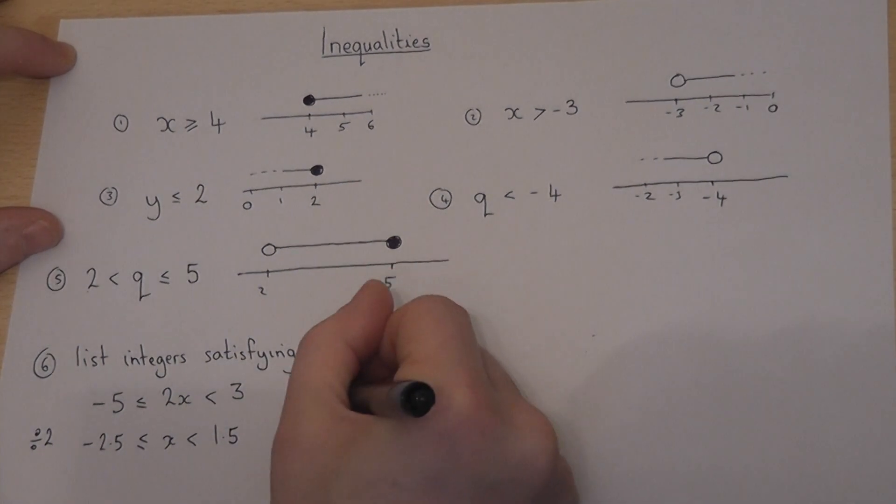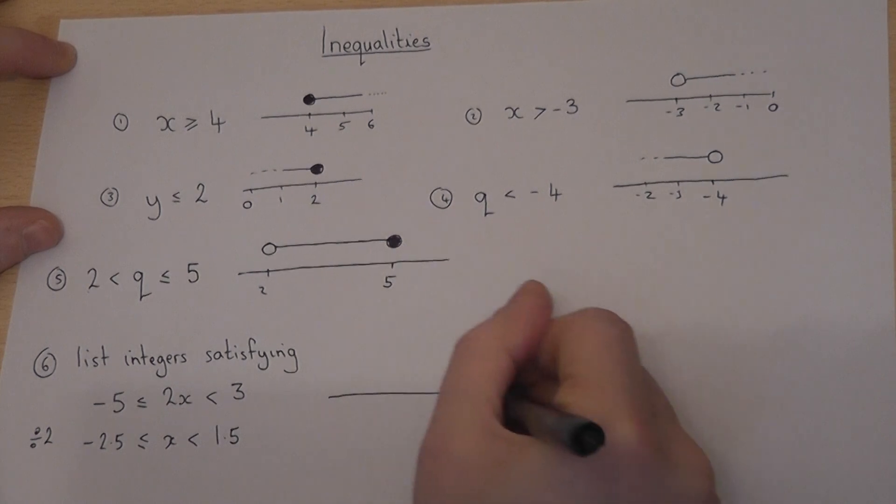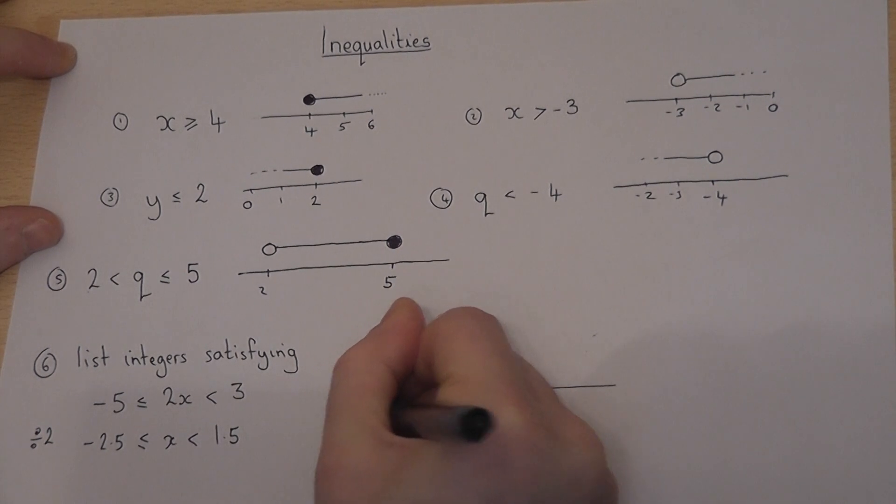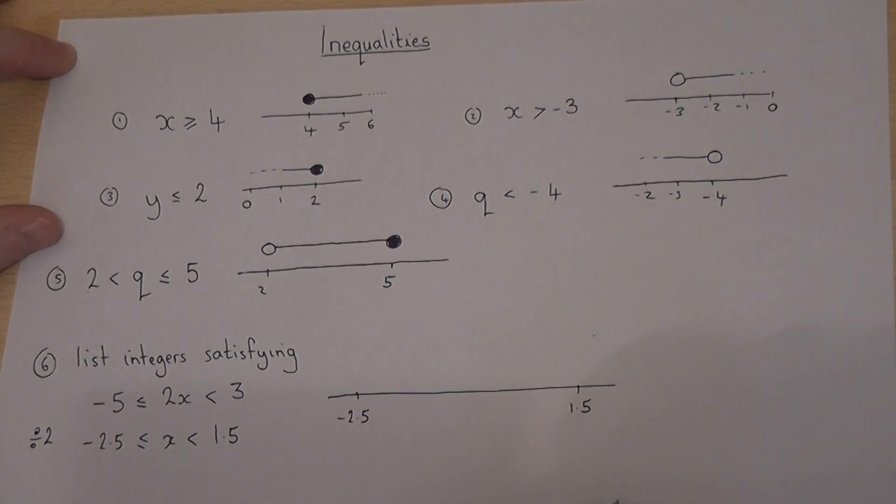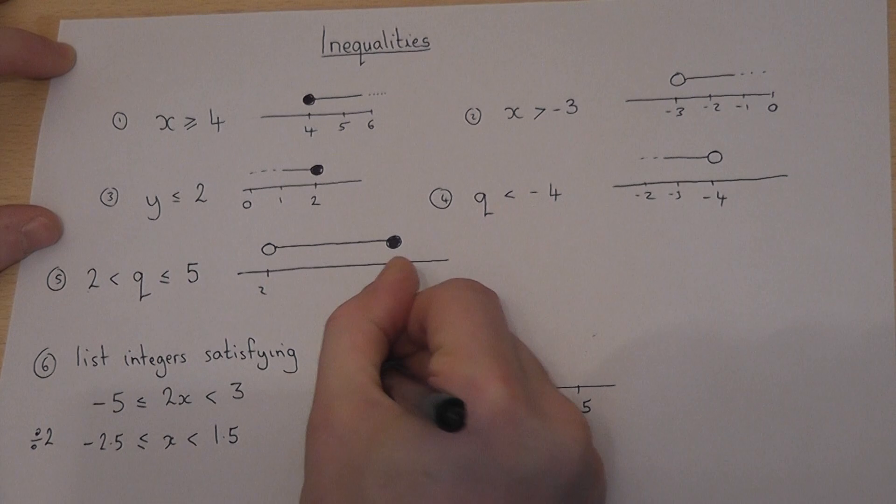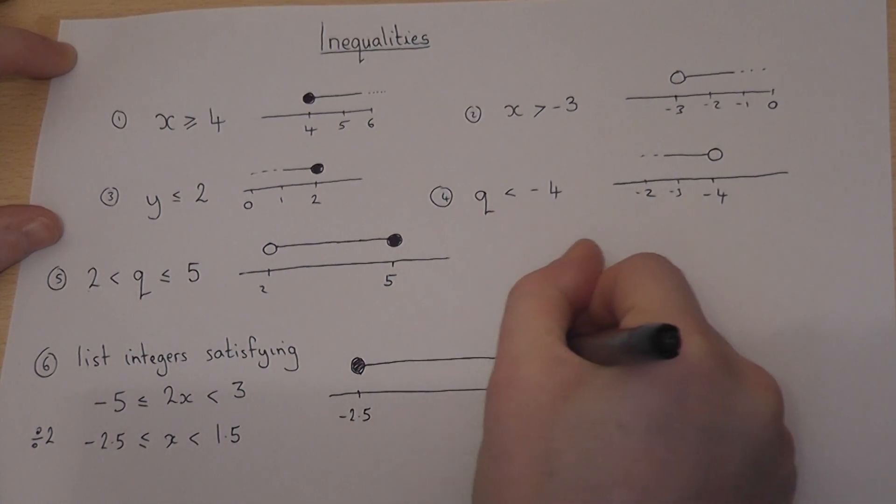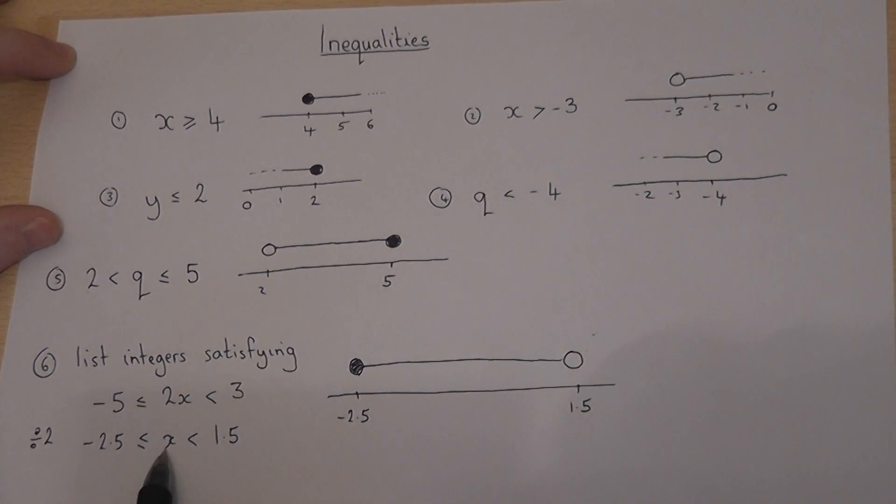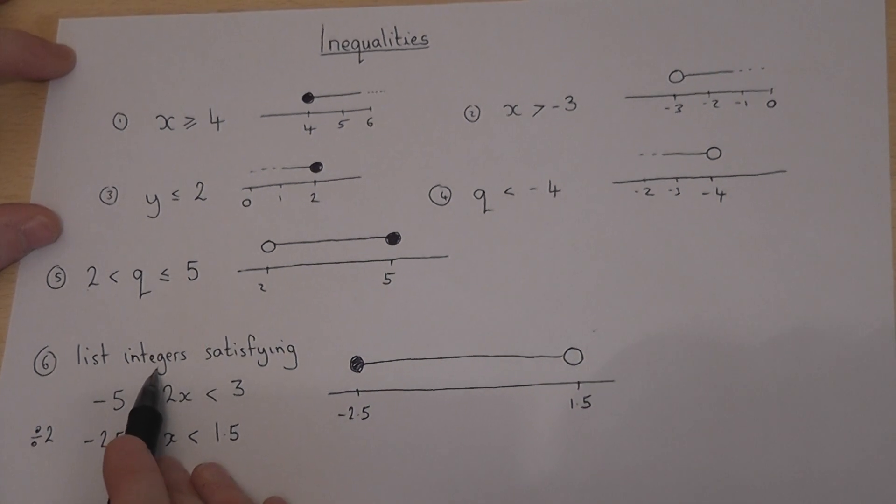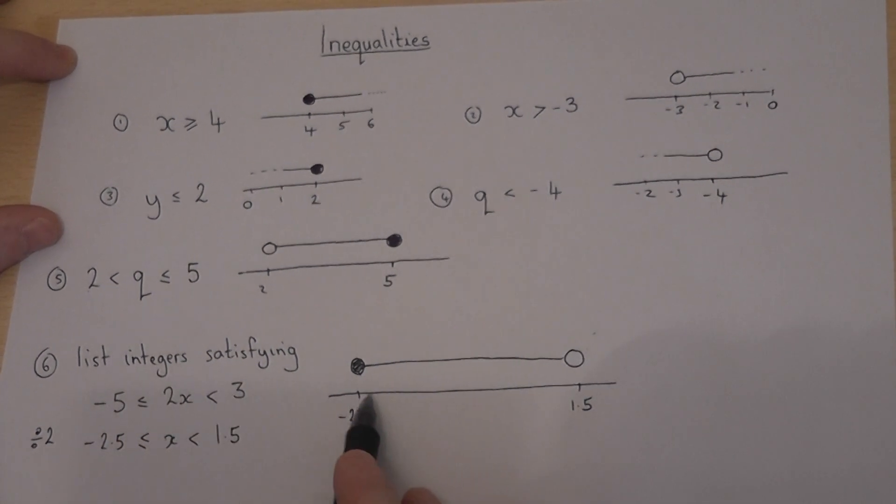Now to visualize this, I'll draw a number line. Minus 2.5, minus 2.5, 1.5. It's only a sketch. And x, we can include minus 2.5, but we cannot include 1.5. So x is somewhere between here. However, x must be an integer or a whole number. So the question is saying which whole numbers lie in this little region here.